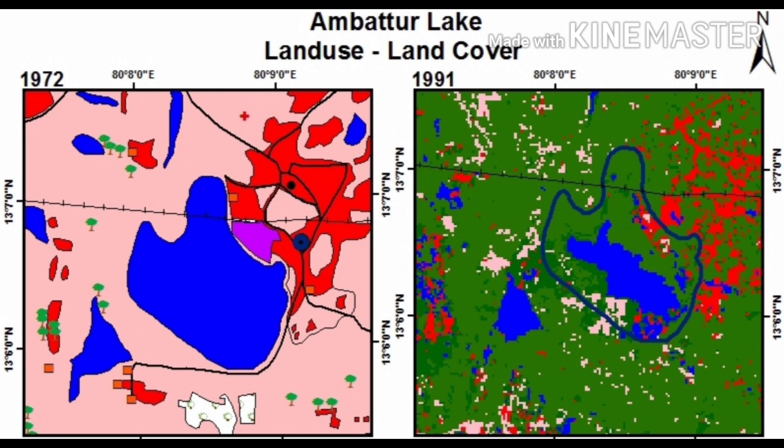The open space near the lake has been subject to encroachment and settlements have started to increase in the lake region. The year 1991 marks the increase of urbanization near Ambatur.